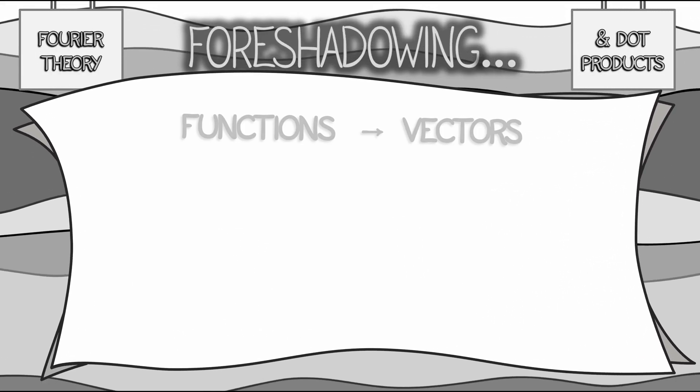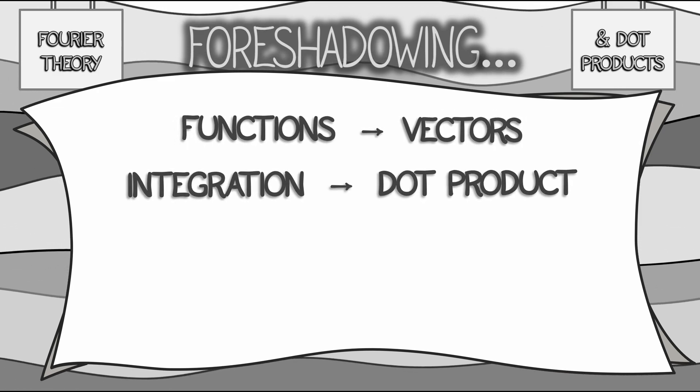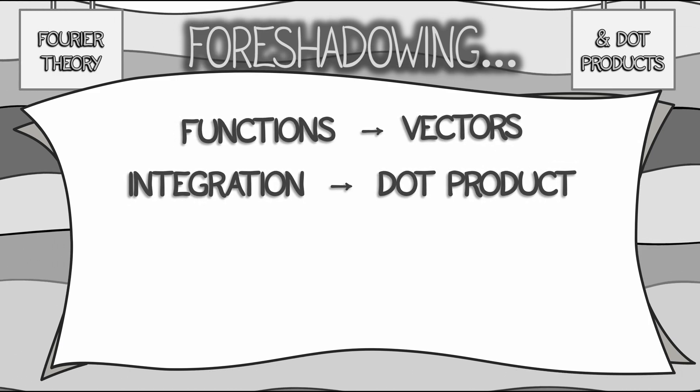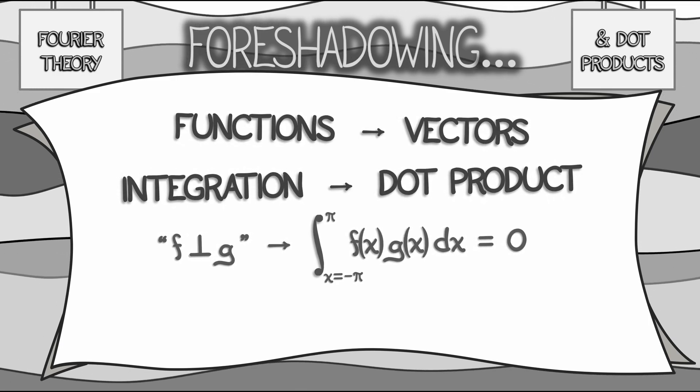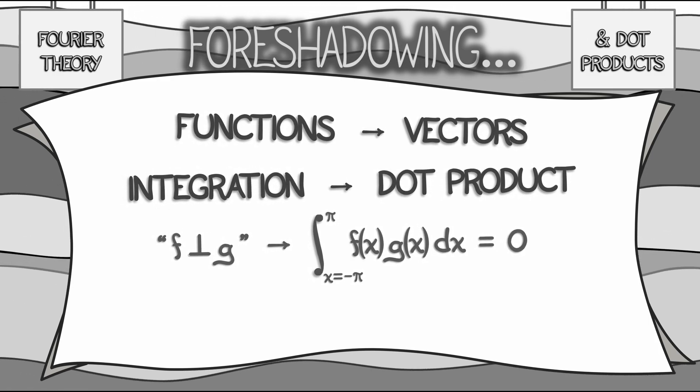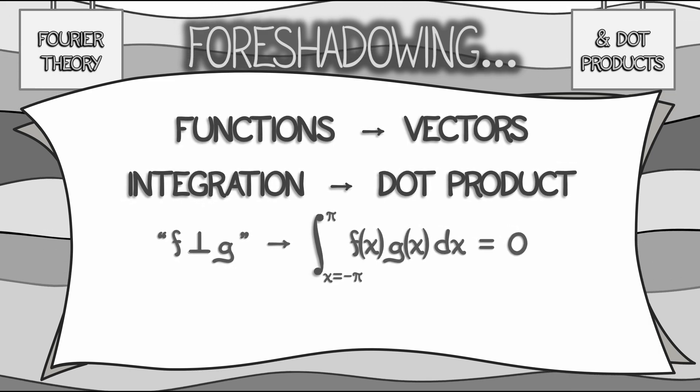What happens is that one thinks of continuous functions as vectors, and the dot product becomes integration, by which we can talk about two functions, f and g, being orthogonal. That's going to wind up meaning that the integral of their product is zero.